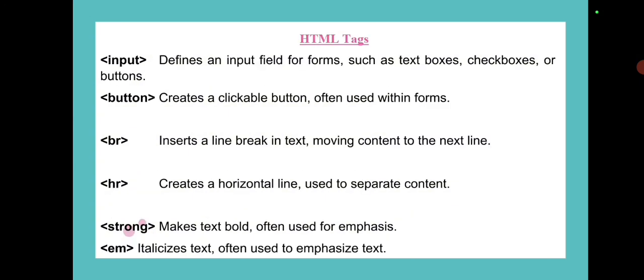The input tag defines an input field for forms, such as text boxes and checkboxes. The br tag is used to create a line break in text. The hr tag creates a horizontal line used to separate content. The strong tag makes text bold, often used for emphasis, and the em tag makes text italic, also often used to emphasize text.